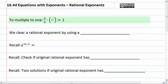To multiply to 1, if we have the fraction a over b, we would multiply by the reciprocal b over a to get 1.